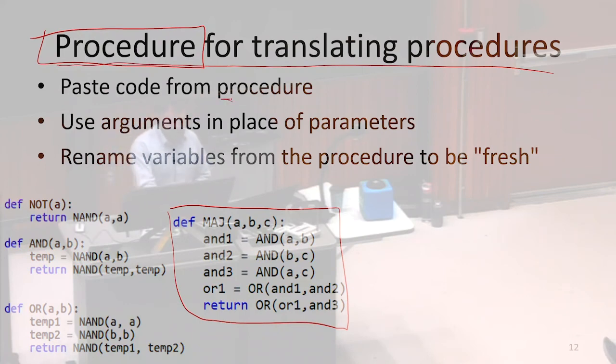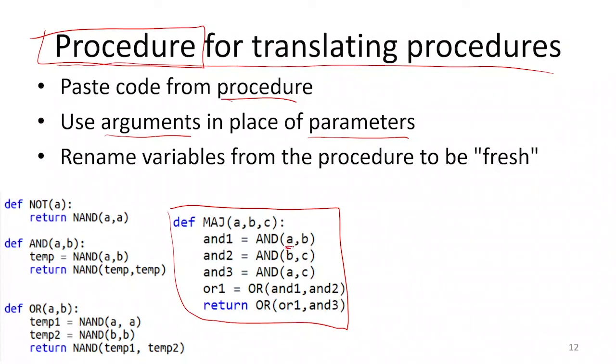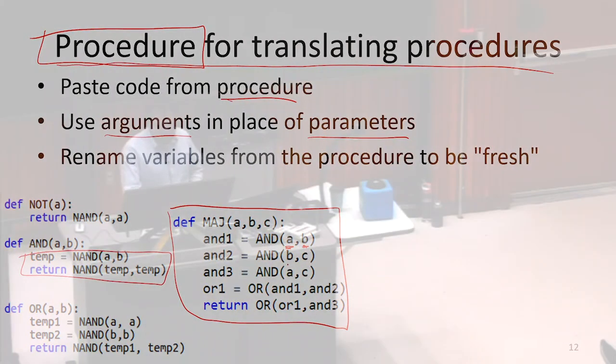Basically, every single time I use some procedure, I'm going to paste in the body of that procedure where I used it. Once I paste that in, the parameters that I had inside that procedure, I'm going to remove those and substitute in the arguments I had when I called that procedure. For instance, here I called the procedure AND on A and B. So when I copy in the body of AND - this is a bad example because we have the same variable. Let's talk about this one where I have B and C. So when I copied in the body for AND over here, every place I saw an A when I copied this in, I would write B instead. And every place I saw B, I would write C instead. Because those were the arguments I gave for these parameters. So substitute the parameters for the arguments I used in that invocation.